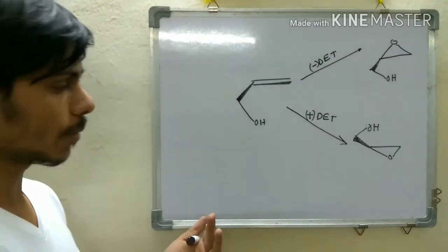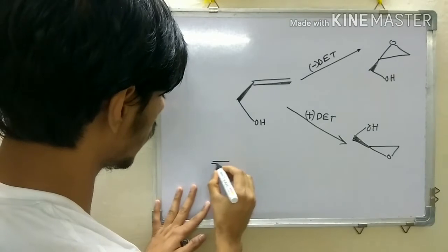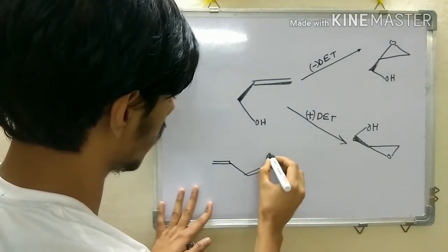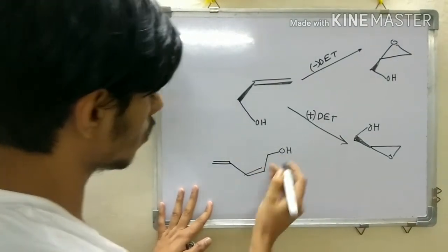One further point: let's say you have a case where you have two alkenes. This is your substrate, and you are given minus DET. What will be your product?